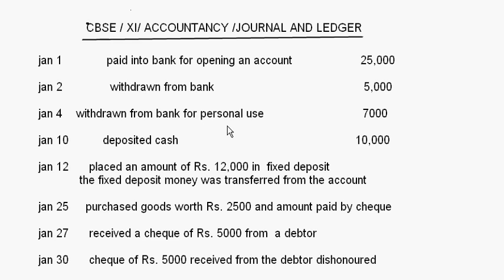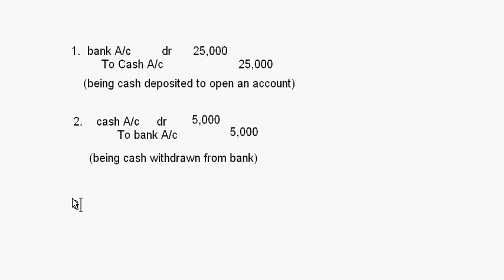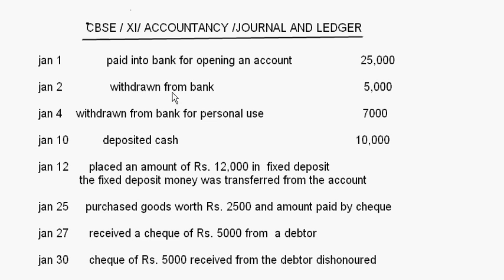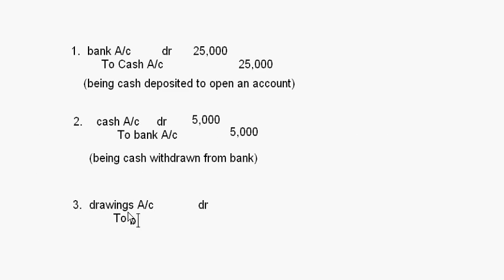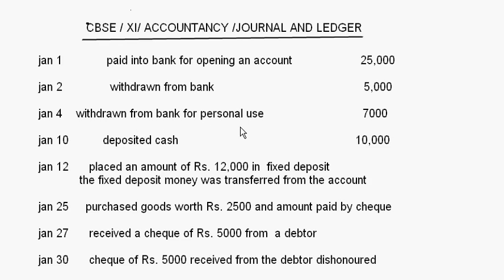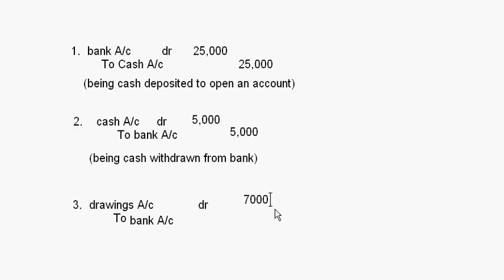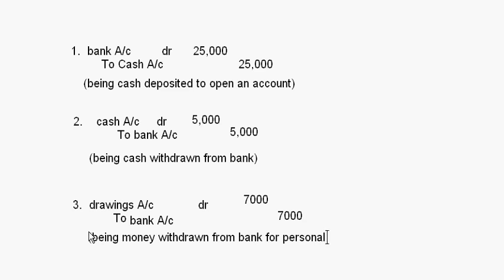The third entry: withdrawn from bank for personal use. When you have personal use or private use, it is drawings account. So drawings account will be debited and to bank account — the amount given is 7,000 rupees. So drawings account to bank account 7,000 rupees, being money withdrawn from bank for personal use.